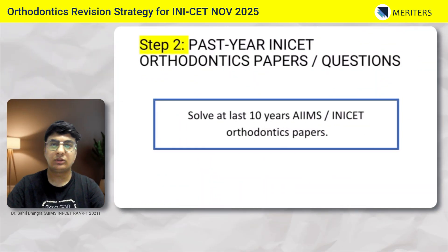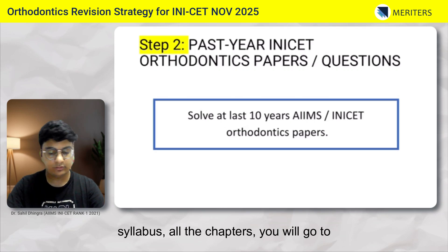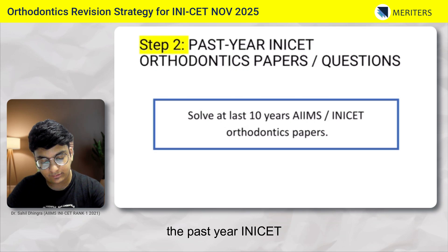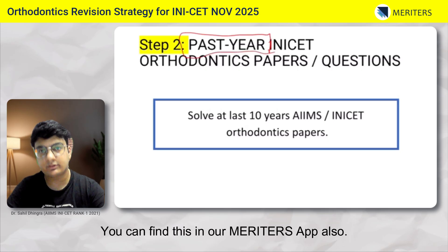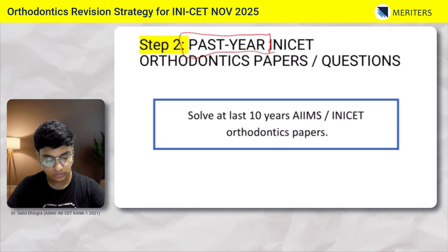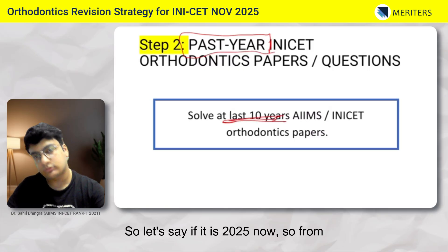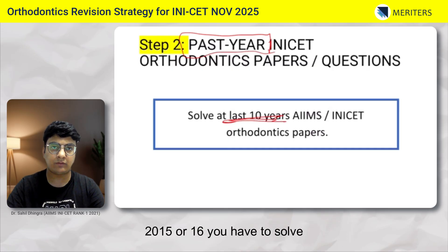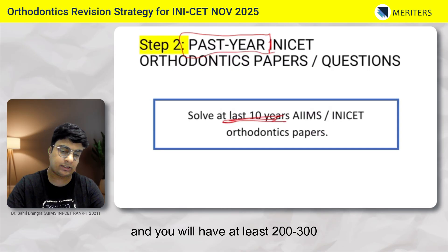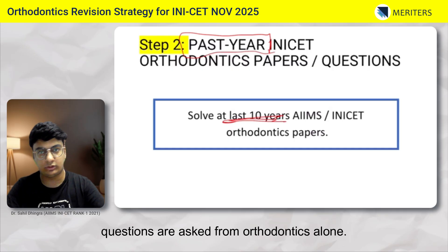Step two: after you have covered the syllabus and all the chapters, you will go to the past year INICET orthodontics papers and questions. You can find these in the Meritors app. The recommendation is to solve at least the past 10 years — so if it is 2025 now, solve from 2015 or 2016 onwards. You will have at least 200 to 300 questions, because every year 20 to 30 questions are asked from orthodontics alone.